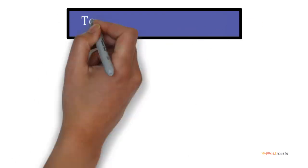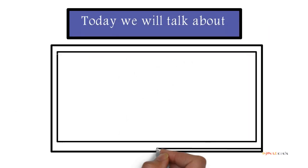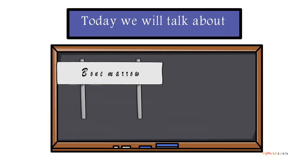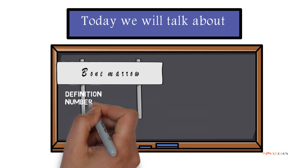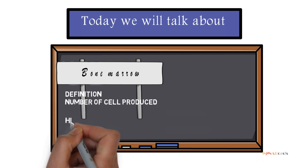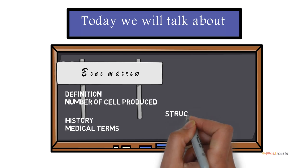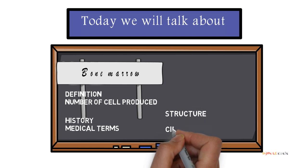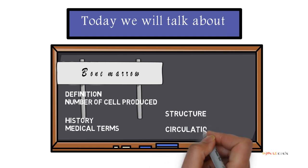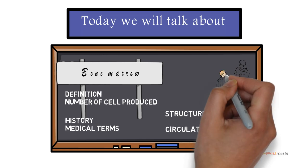Today we're going to take more detailed information about bone marrow: what is the bone marrow and how many cells are produced by it. Then we will take a short history and medical terms that use the bone marrow, then the bone marrow circulation and structure. Let's get started.